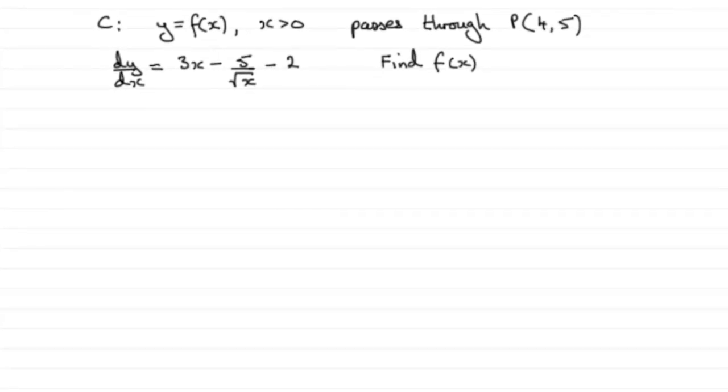Now for this question then, briefly we've got a curve C with equation y equals f of x where x is greater than zero. We're told that it passes through this point P with coordinates 4, 5 and we're given the gradient function dy/dx. It equals 3x minus 5 over root x minus 2. And the question is, we've got to find f of x.